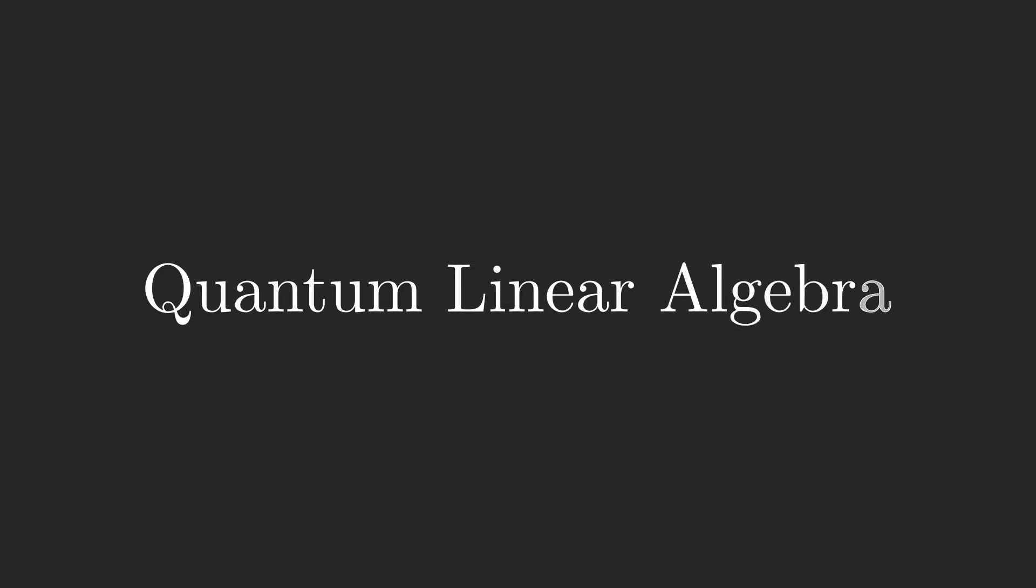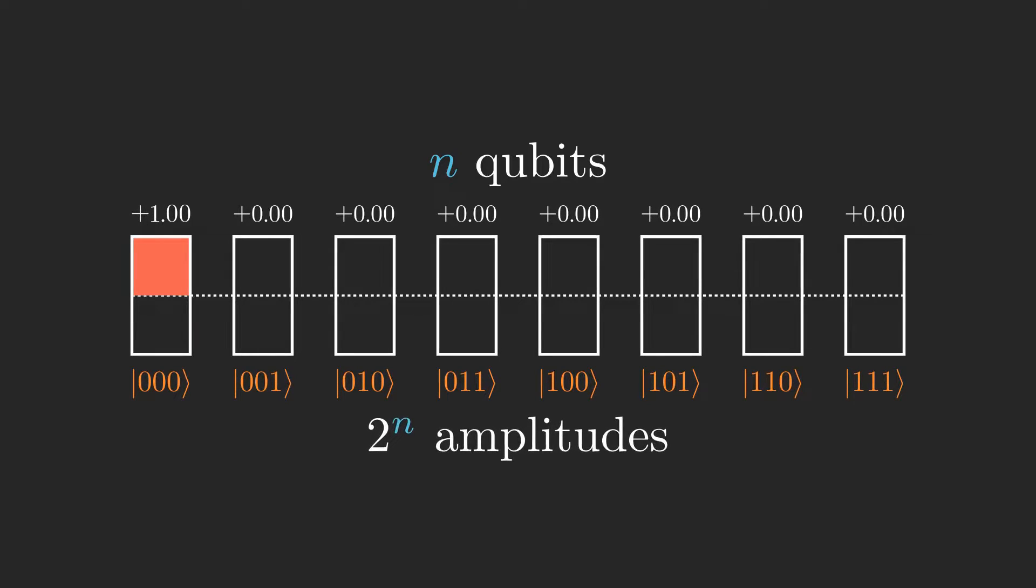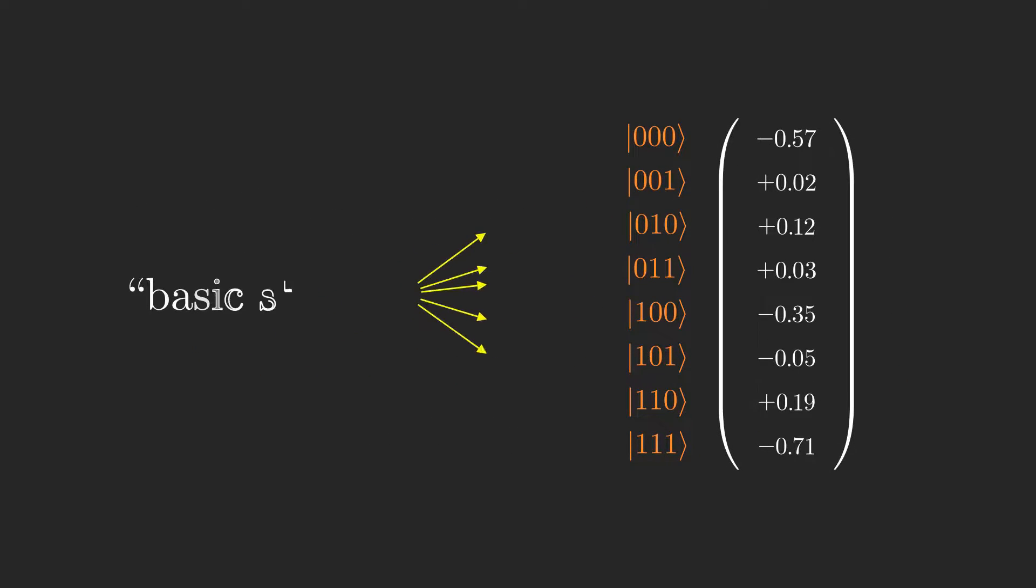I mentioned linear algebra in part 2, and that was no coincidence. Since the state of n qubits can be fully described using a list of 2 to the n amplitudes, we can think about such states as 2 to the n dimensional vectors of amplitudes on each of the basis states, which, by the way, are actually called the basis states in standard jargon, because they form a basis for 2 to the n dimensional space.